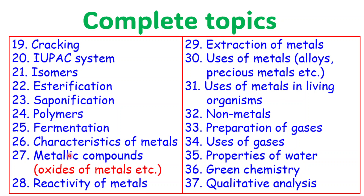Esterification, saponification — tested at least once in the past three years. Polymers, fermentation, characteristics of metals, metallic compounds, oxides of metals, reactivity series of metals, extraction of metals, use of metals especially alloys, and precious metals such as copper, gold, and silver. Use of metals in living organisms. Non-metals and preparation of gases, properties of water. Green chemistry — relatively new emphasis is now placed on it in the syllabus, so pay attention as it may pop up. Qualitative analysis.